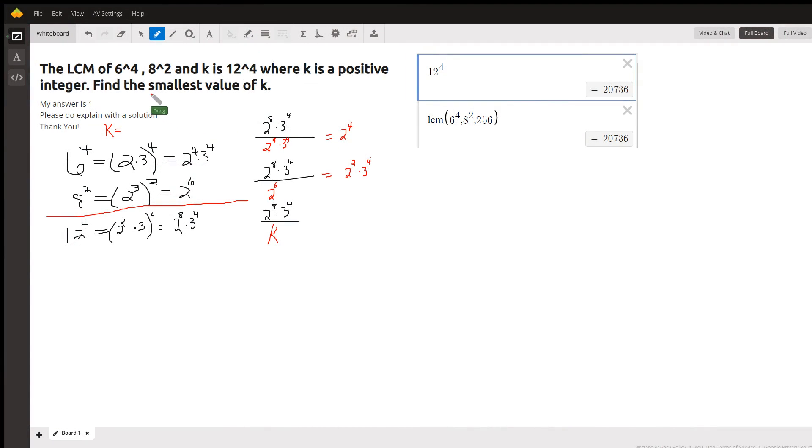Okay, probably the easiest way to see this is to rewrite 6 to the 4th, 8 to the 2nd, and 12 to the 4th in prime factored form.